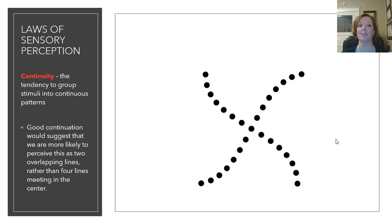The next Gestalt Law is continuity. This is the tendency to group stimuli into continuous patterns. So, this to me doesn't just look like a bunch of random dots. Good continuation suggests that we're more likely to perceive this as two overlapping lines rather than four lines meeting in the center. So, you kind of see one or the other overlapping than four lines coming together in the center or just a bunch of random dots.